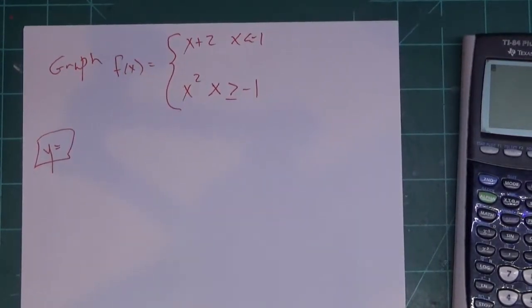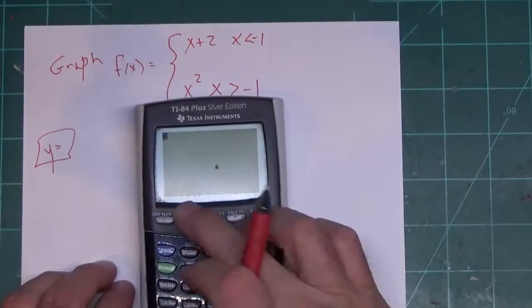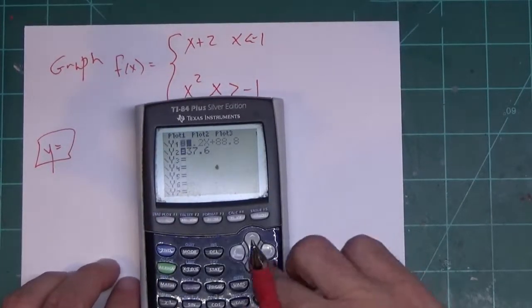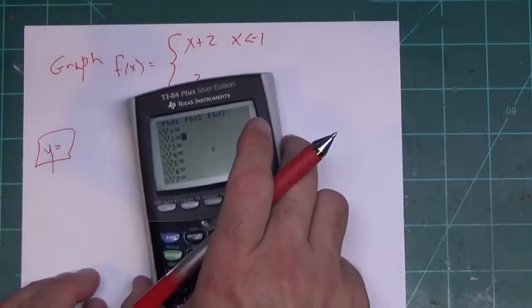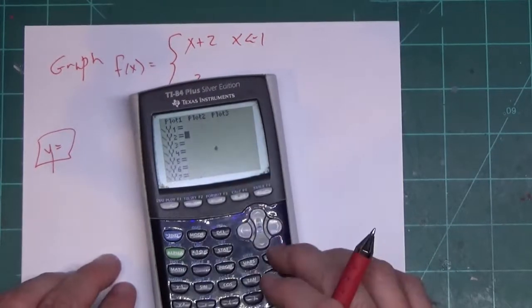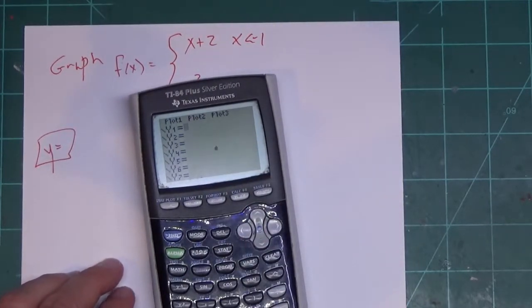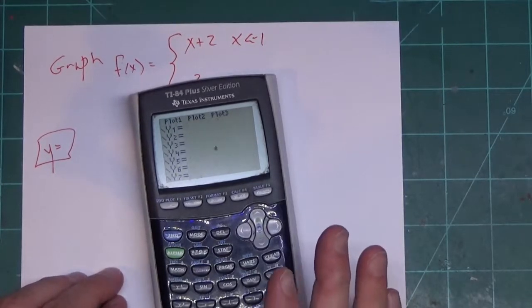Now we're going to press Y equals. I'm going to clear out what's in here. When you go to graph this, you have to type it in in a funny way. You could type part of it in Y1 and Y2, but the calculator will let you type the entire thing in at once.